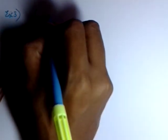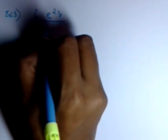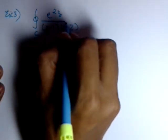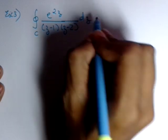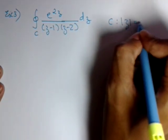So our example is: integration along the closed contour C of e raised to 2z upon (z minus 1)(z minus 2) dz, where the contour is mod of z equal to 3.